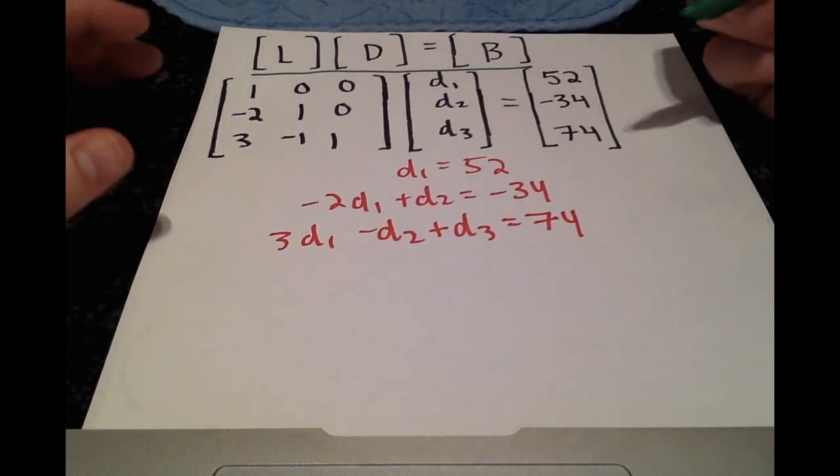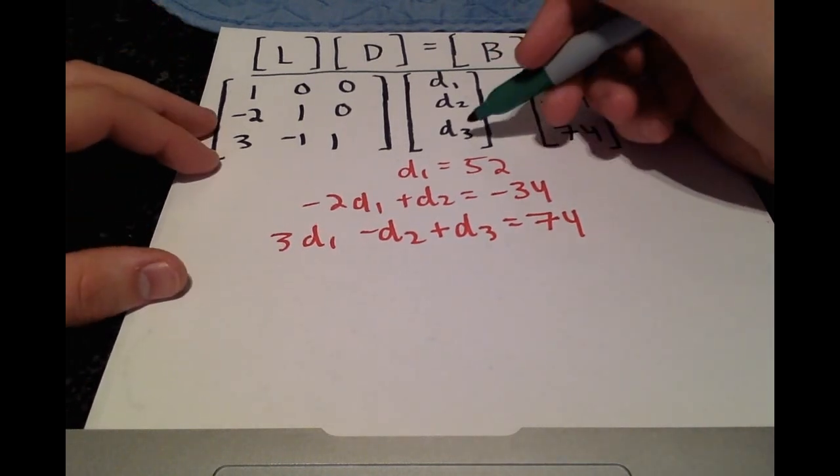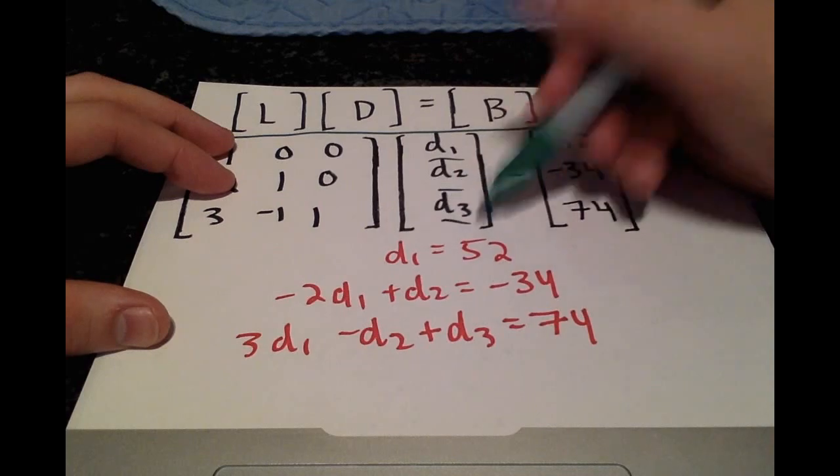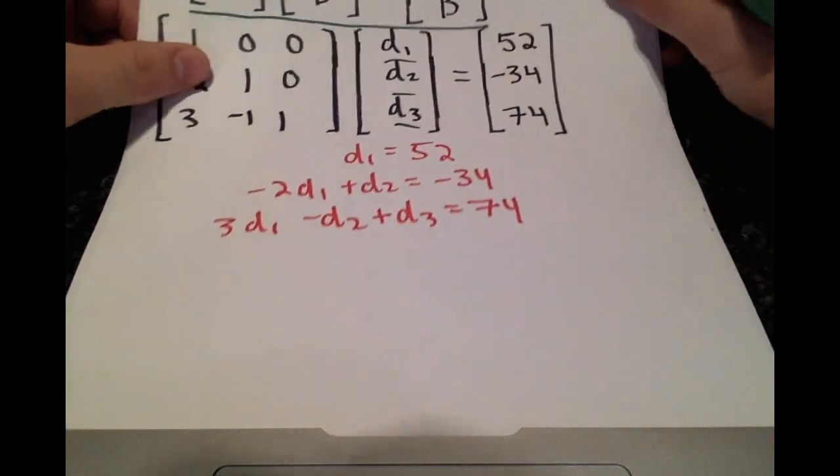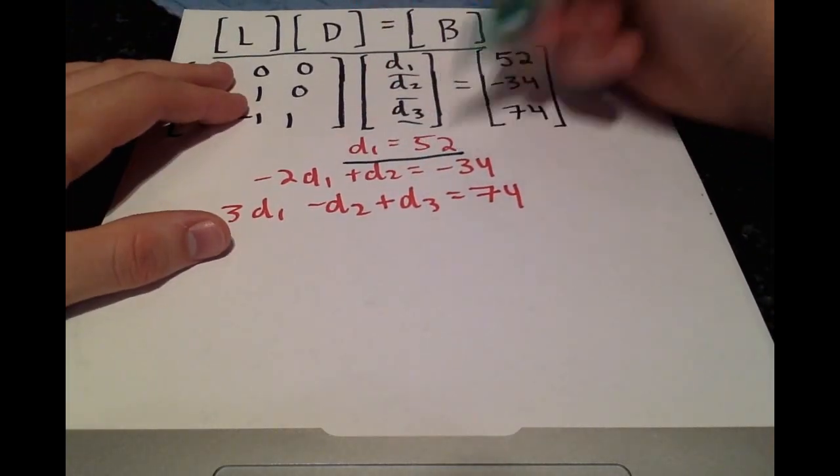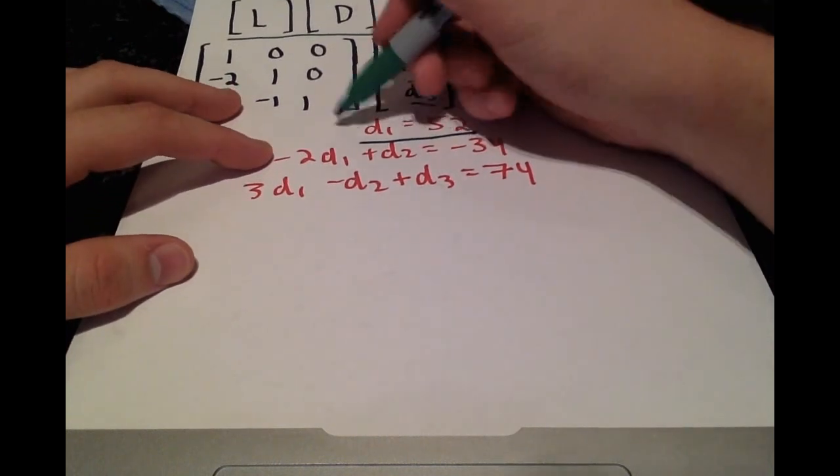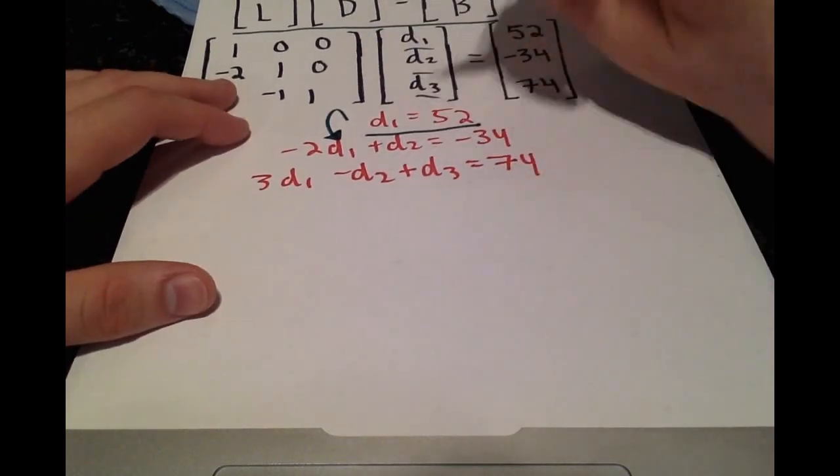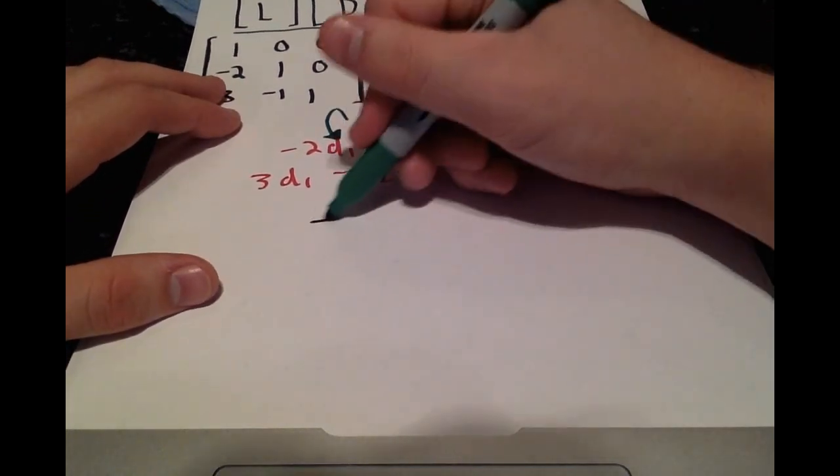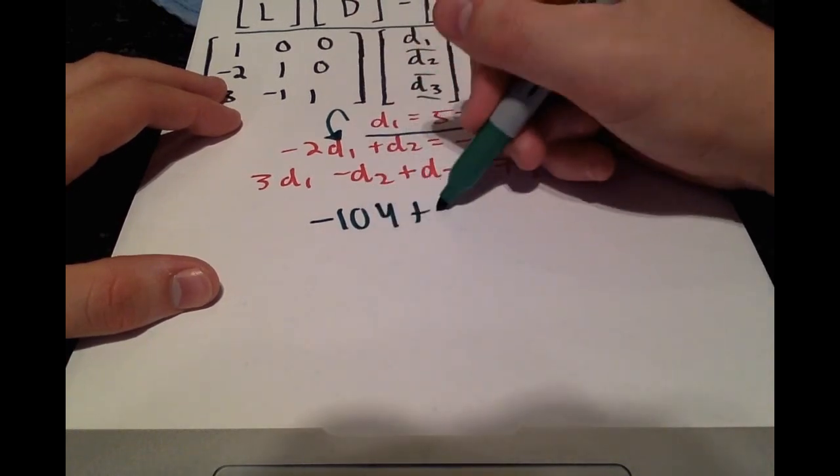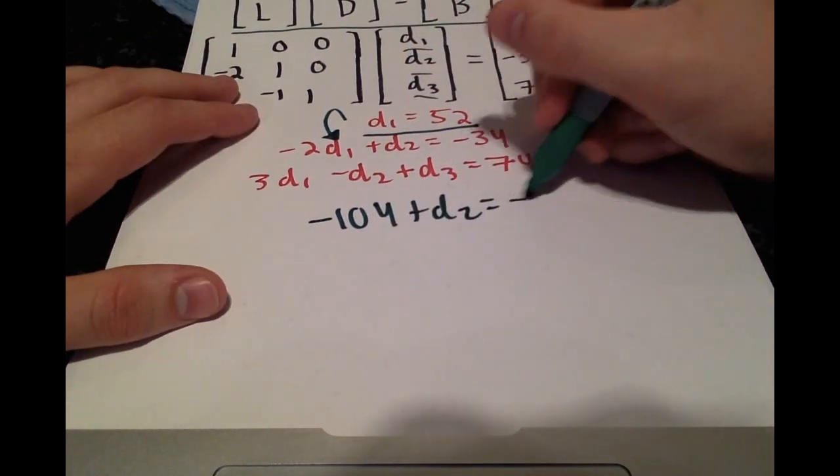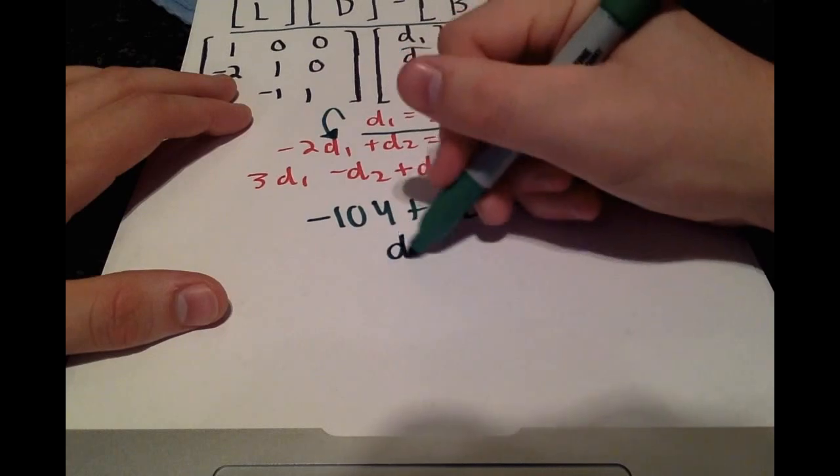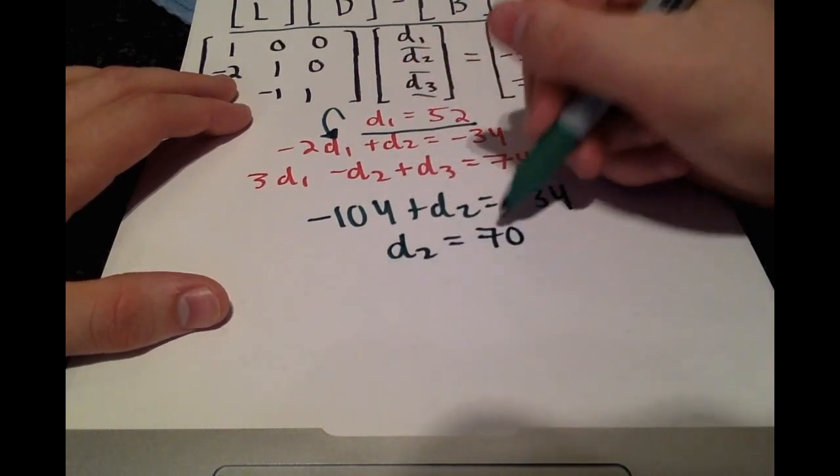So we can begin to get each term d1, d2, and d3. Right away we see d1 is equal to 52. We can plug that into here. We'll get negative 104 plus d2 equals negative 34. So d2 must be equal to 70.